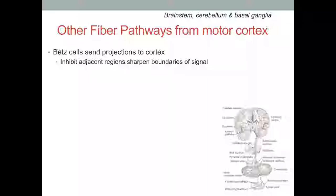Some other fibers coming from the motor cortex: we have the Betz cells, which we remember from the motor cortex. Those are some inhibitory cells — they're really big. Because they're inhibitory, they can hyperpolarize cells around them, which means they can inhibit adjacent regions of a motor trace or motor element to sharpen the boundaries of the signal so that you don't get any unwanted movements, any shaking, any swaying side to side. The Betz cells help to generate the smoothest movement possible by inhibiting adjacent neurons.